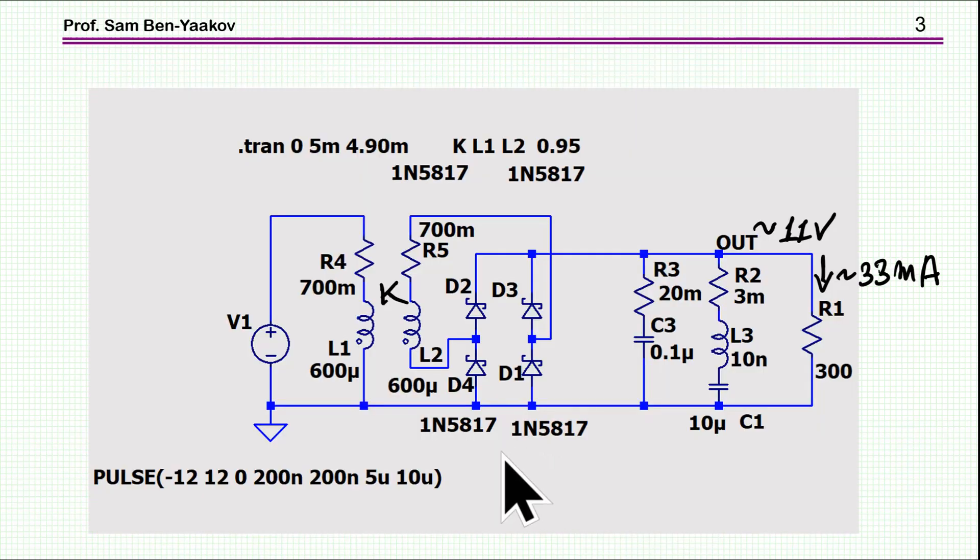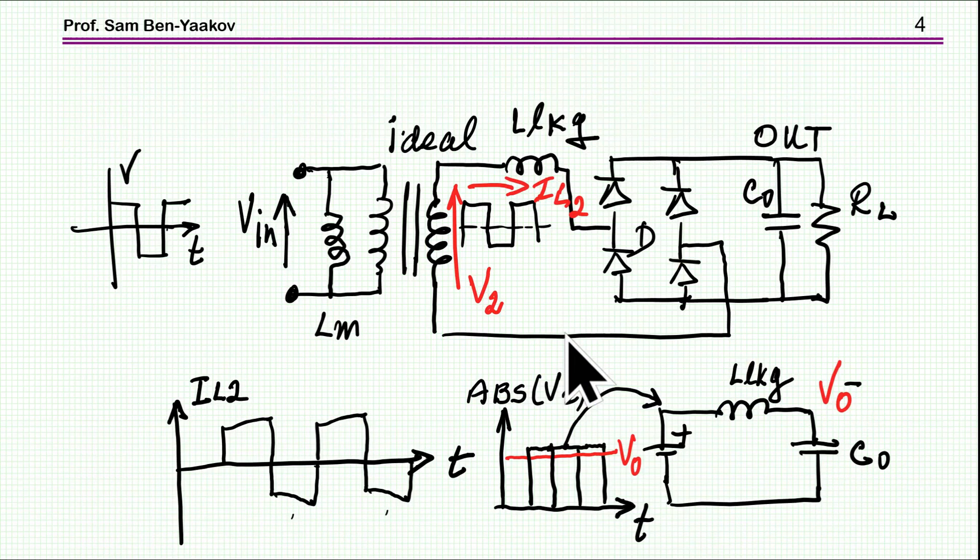Here is an LTSpice schematic for one of the channels. We have the drive plus-minus 12 volt. This is now 100 kilohertz, duty cycle 50%. I have rise time and fall time of 200 nanoseconds which is realistic. The coupling coefficient is not 1, it's 0.95 because the inductance is needed here in the operation. We have the rectifier and I'm showing a 0.1 and 10 microfarad output capacitor.